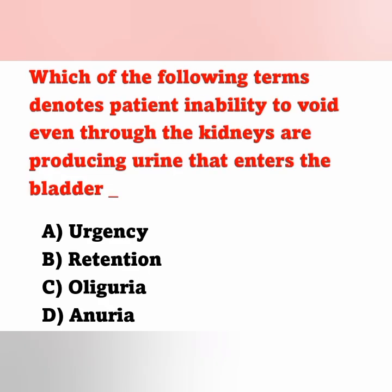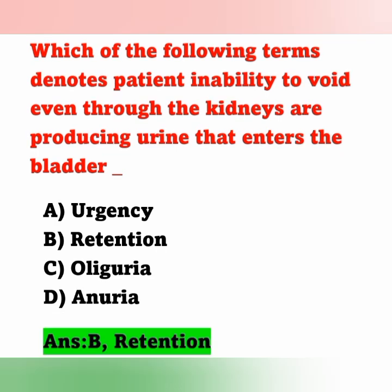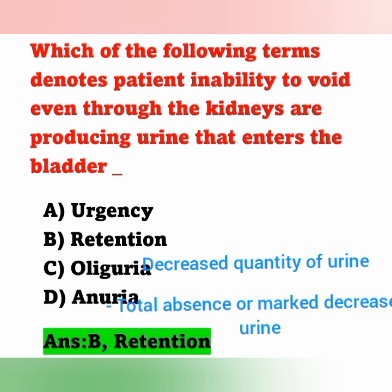The next question: Which of the following terms denotes a patient's inability to void even though the kidneys are producing urine that enters the bladder? Option A: urgency; Option B: retention; Option C: oliguria; Option D: anuria. The kidneys are producing urine and it enters the bladder, but the patient cannot pass urine — that is known as retention. Option B is the correct answer. Urgency means a sudden or frequent need to pass urine. Oliguria means decreased quantity of urine. Anuria means total absence or marked decrease in urine.